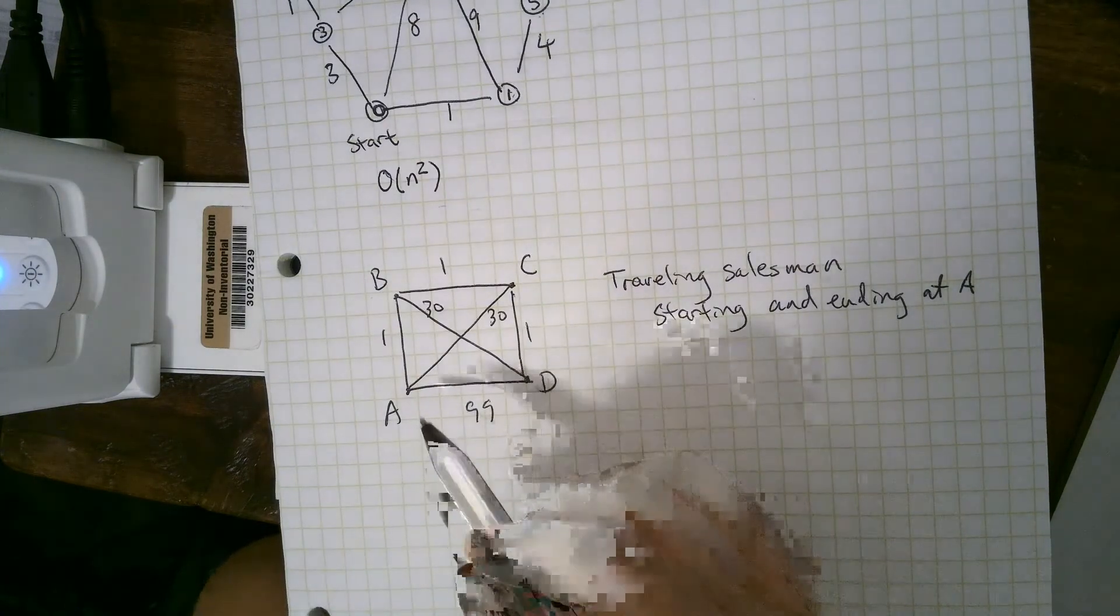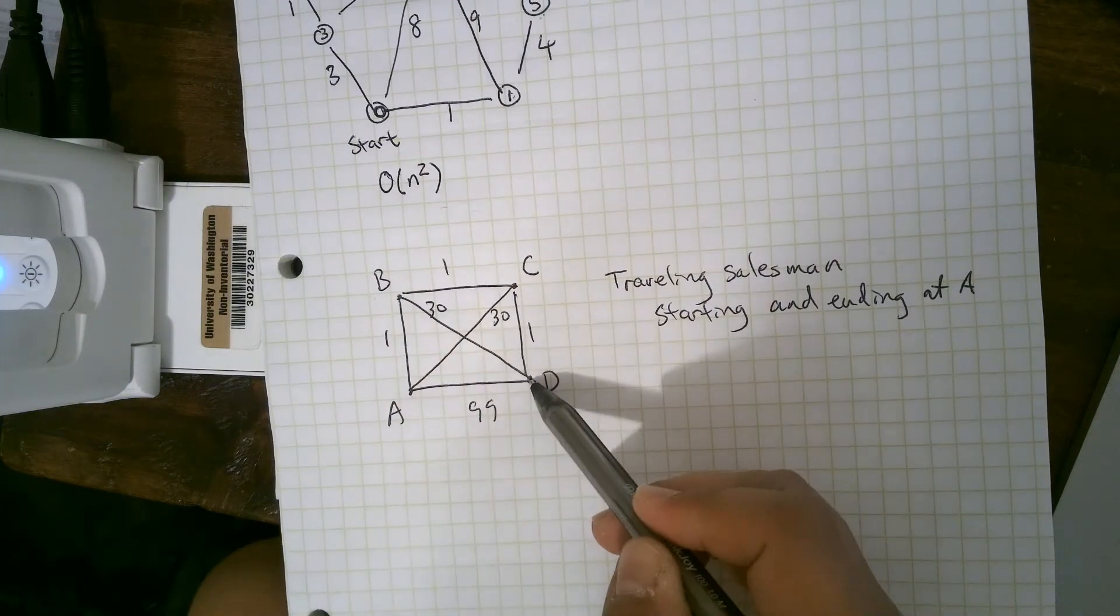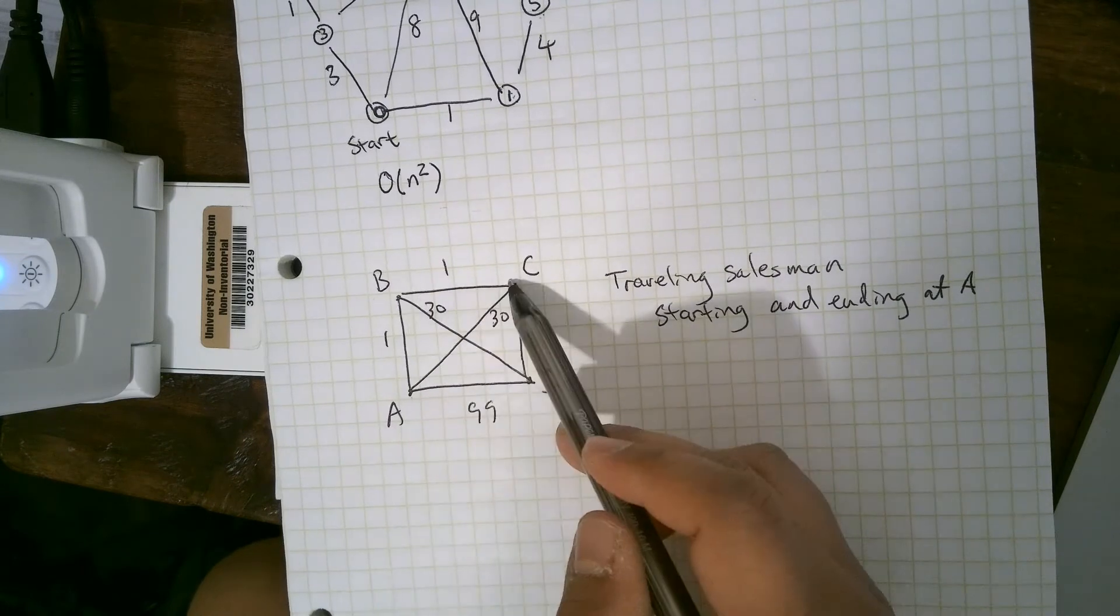Starting and ending at A. Well, if you found the shortest path from A to D, for instance, that's this one that has length three.